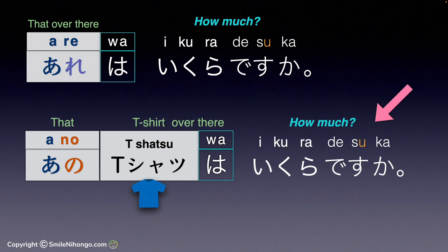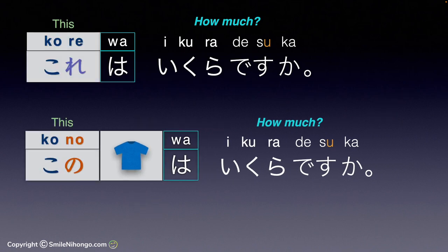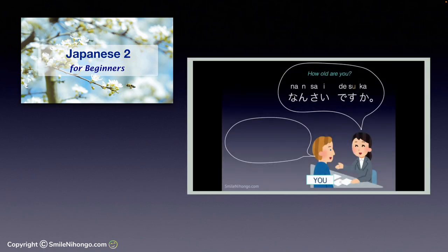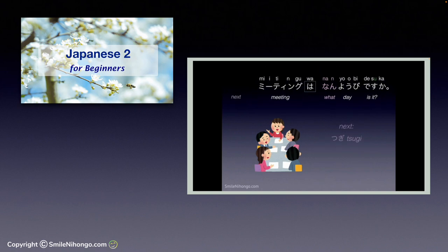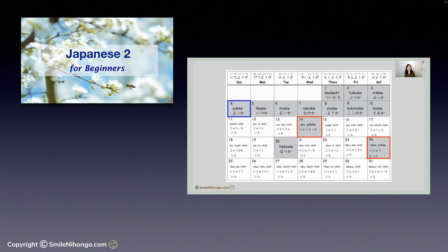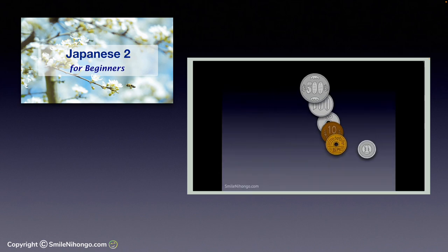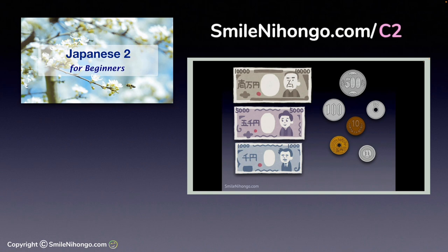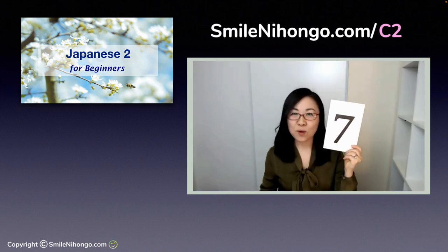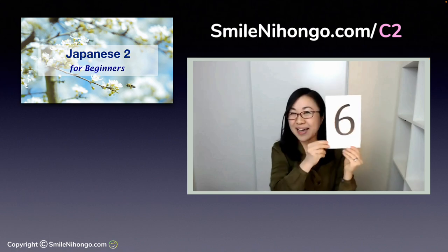I hope you now understand the difference between the Re series and the No series for コソア. By the way, this is a sample lesson from my online course Japanese 2 — Basic Japanese for Beginners. The course is self-paced with lesson videos so you can learn Japanese in your spare time. There are lots of PDF materials you can download and I always answer your questions. Please go to smilenihongo.com/C2 to learn more details. Okay, let's continue with the lesson.